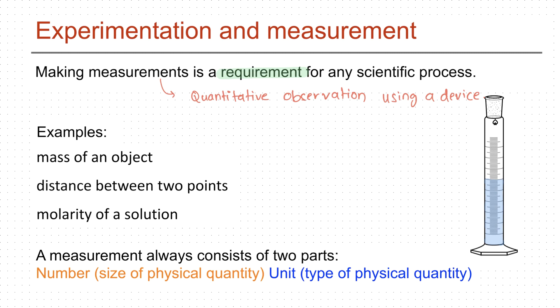For example, mass of an object is 20.50 grams. Distance between New York and Boston is 215 miles. The molarity of a given sodium chloride solution is 0.25 molar. The number and the unit are so dependent on each other that it is meaningless to use one without the other.